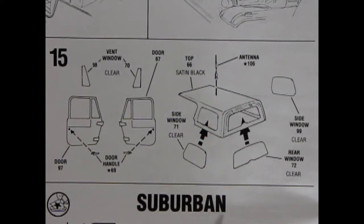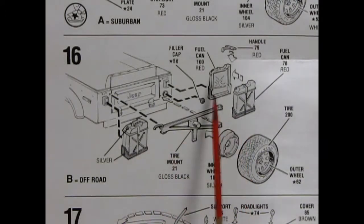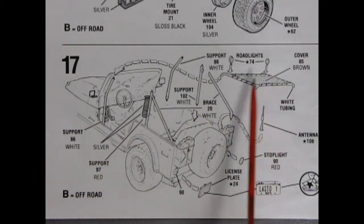Panel 15 shows the assembly for our doors and our roof with all the glass and the antenna. These are used on the Suburban and this is how you build the off-road. You add in these fuel tanks onto the back as well as the spare tire mount. Then you add in the additional supports to the roll cage as well as this cool top with the road lights and a license plate.